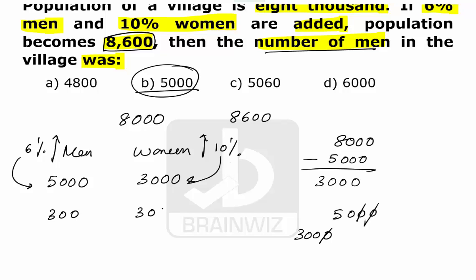So if you just try to see the number of men and the number of women totally increased by 600. So the new population will be 8600, which is clearly matching. So we can simply say that option B is suitable here. So the number of men was 5000.